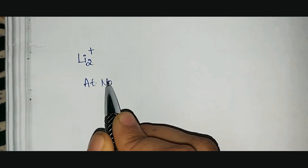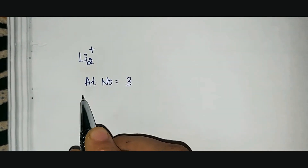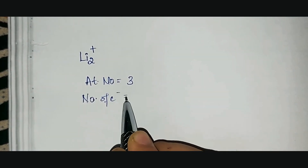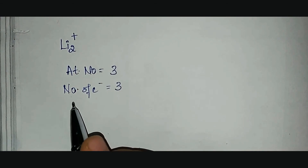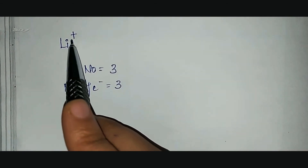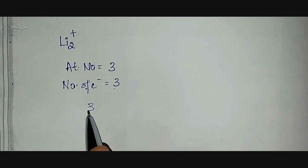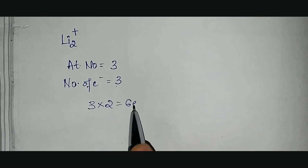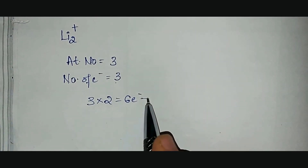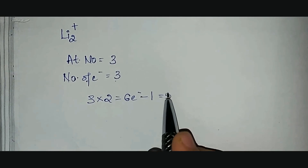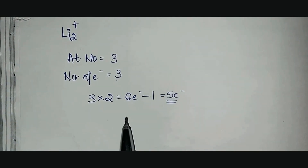Let us go to our next example: the lithium molecule with a positive charge, Li₂⁺. The atomic number of lithium is 3, so the number of electrons per atom is also 3. For 2 lithium atoms, the total is 3 × 2 = 6 electrons. Since it carries a positive charge, this indicates removal of 1 electron, giving a total of 5 electrons.